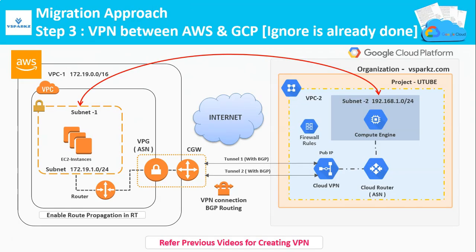Step 3: You need to create a VPN between AWS and GCP. You can ignore this step if you have already done this in steps 1 and 2. This is the architecture diagram for VPN, and if you don't know how to create a VPN between these two clouds, please refer to the channel's previous videos.